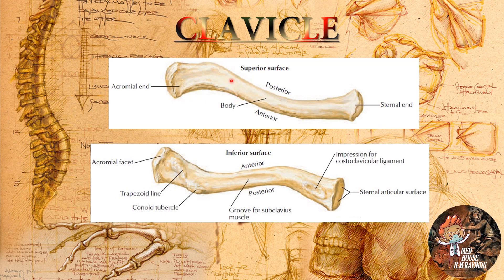Here you can see the posterior surface and here the anterior surface. The anterior medial surface is convex in shape, while the anterior lateral part is concave in shape.